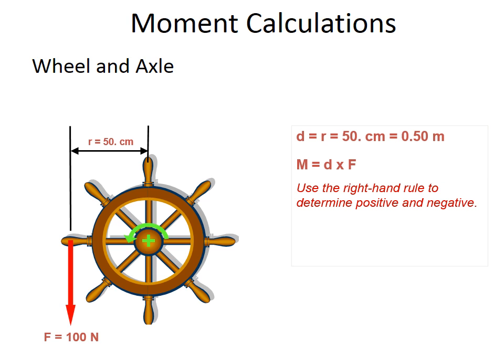And again, the right-hand rule, just a reminder that counterclockwise is positive. When we plug in our numbers, 100 newtons times half a meter gives us 50 newton meters. And we don't have to put the plus there, it's just assumed that if we don't put negative, it's positive, just like we would in everyday math.